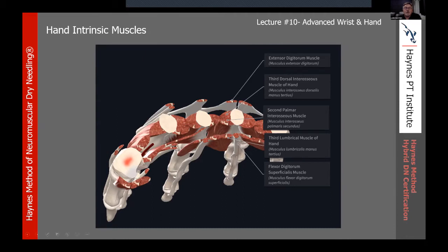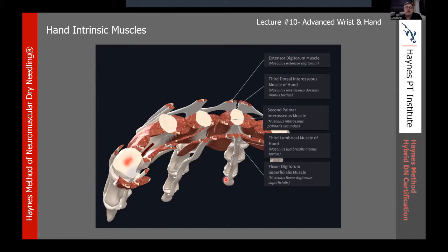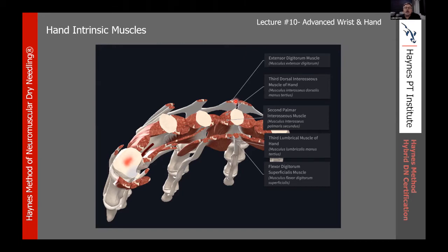Looking at the cross-section: the lumbricals are the most superficial. We have our palmar interossei and then our dorsal interossei, with extensor digitorum superficial to that. It's going to be hard to differentiate by needling just the lumbricals without getting the palmar interossei. Similarly, it's hard to get the dorsal interossei without also going through the palmar interossei. If we are having issues in the hand between the fingers and along the metacarpals, we'll likely want to treat all of that anyway.